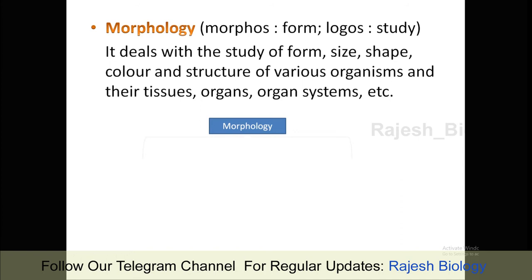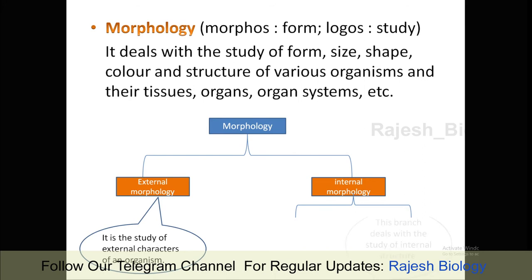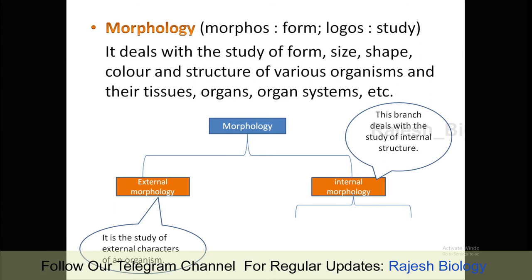Morphology has two branches: external morphology, which we can see with our naked eye, and internal morphology. External morphology is the study of external characters of an organism. Internal morphology is the branch which deals with the internal structure of an organism.